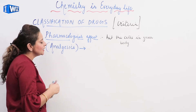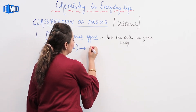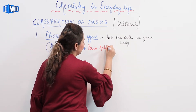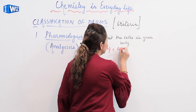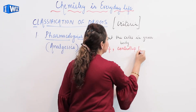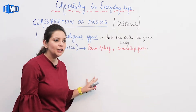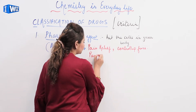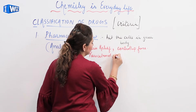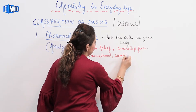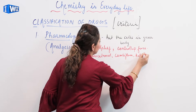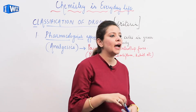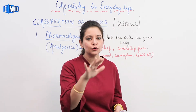Analgesics — their main function is, first, they are pain relievers, meaning they give you relief from pain. Or they also help in controlling fever. Many medicines relieve pain, like paracetamol. If you want something stronger, you have combiflam. So there are lots of medicines that relieve your pain or help bring your fever back to normal.